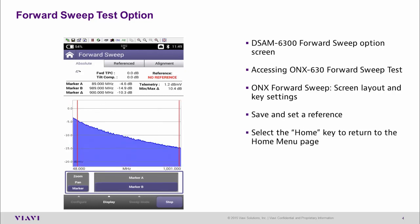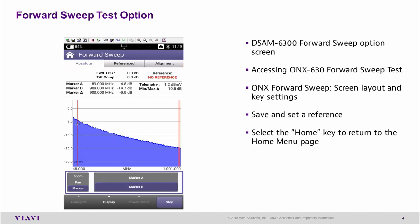The first thing is that we're now in the absolute tab. You can see we have three tabs: absolute, referenced, and alignment. Within the absolute tab you can also see that no reference has yet been set, but the test is running for forward sweep and here we can see the frequencies and the levels for this particular test.